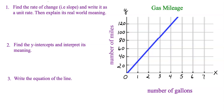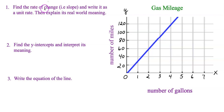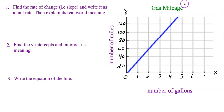Hey there, GED math students — or any math student watching. You might see a problem like this on the GED math test or an algebra test. It deals with rate of change, or slope — specifically a real-world application of slope. Let's jump into question one: find the rate of change (slope) and write it as a unit rate, then explain its real-world meaning. Looking at the graph, the title is 'Gas Mileage,' which tells us what this graph is about.